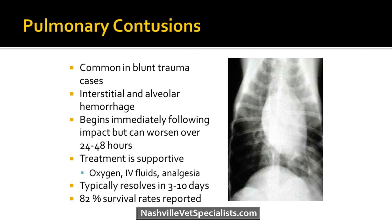Pulmonary contusions are also common in trauma cases, particularly hit-by-car. They occur from interstitial and alveolar hemorrhage, can begin immediately after impact, but worsen over the next 24 to 48 hours. Treatment is supportive — oxygen, fluids, pain medications — and they typically resolve on their own in 3 to 10 days. Survival rate is about 82% reported in the literature.